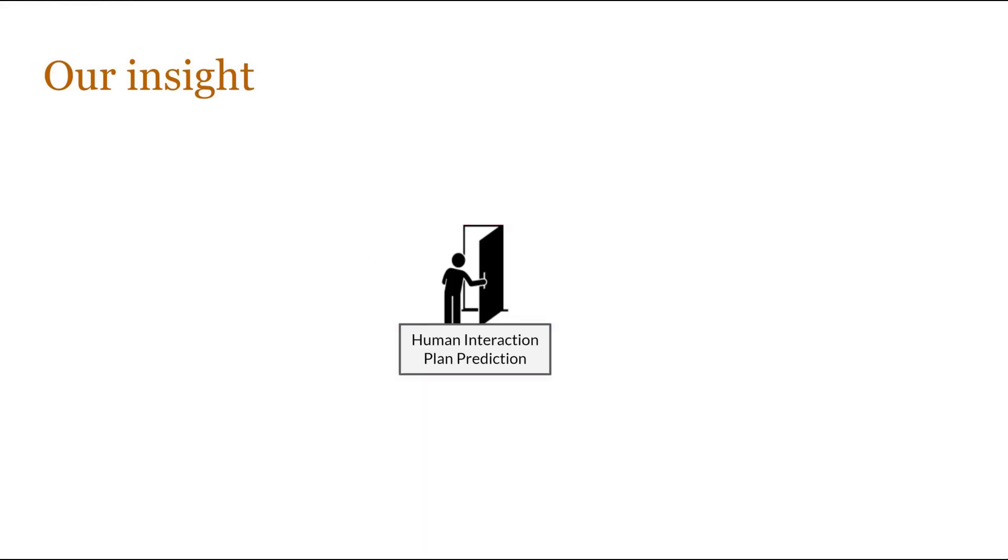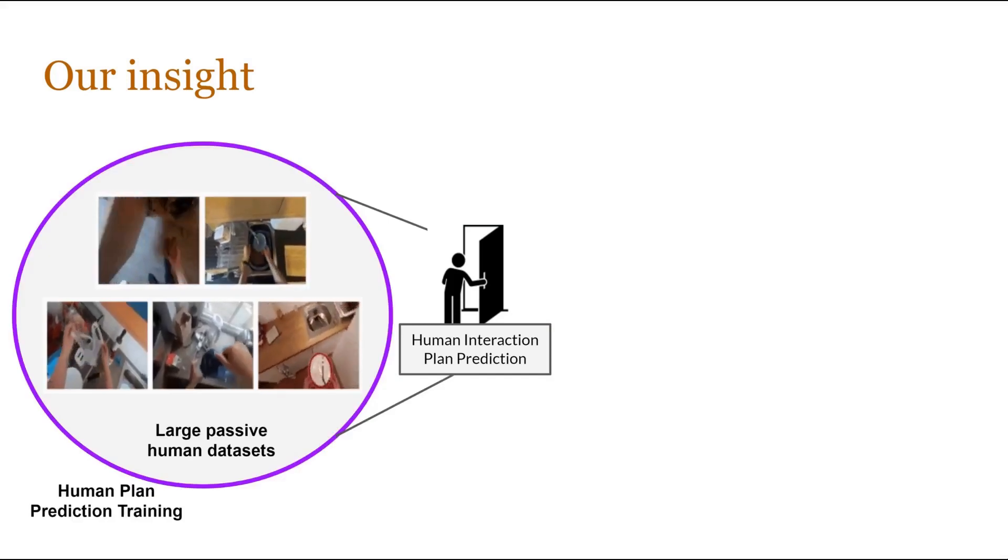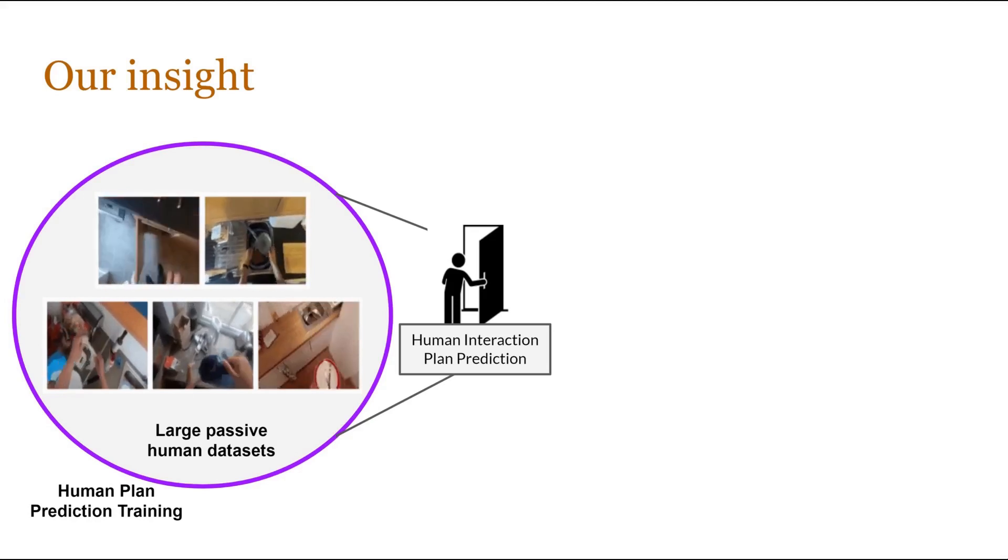The key advantage of this is that we can learn a human plan prediction model by leveraging large passive datasets of human videos that are easily available on the web. These videos contain humans performing everyday activities in diverse homes, offices, and kitchens. We can easily obtain such videos in the order of hundreds of thousands of clips from YouTube and other curated sources like Ego4D and EpicKitchens.